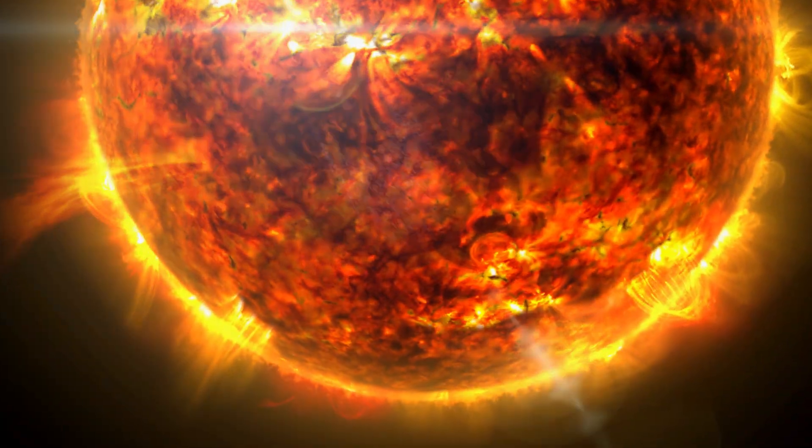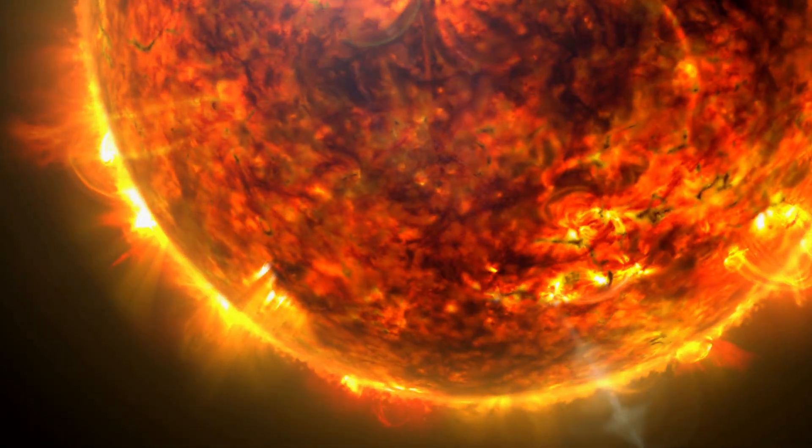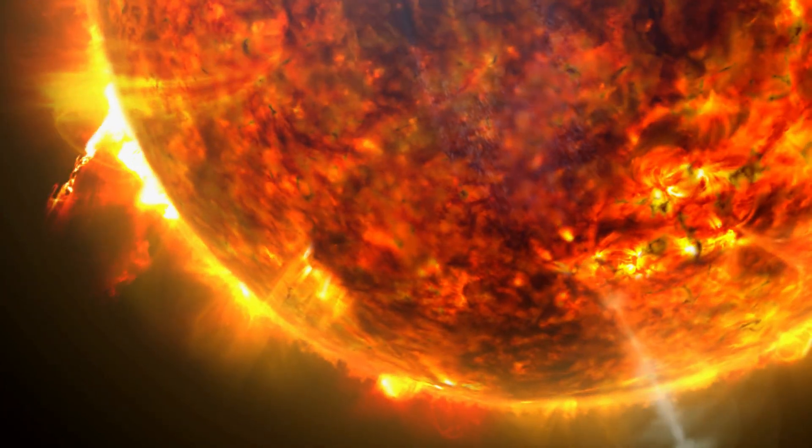The Sun's outer atmosphere, the corona, is strangely hotter than the surface, with temperatures reaching millions of degrees. Scientists are still trying to figure out exactly why that is.